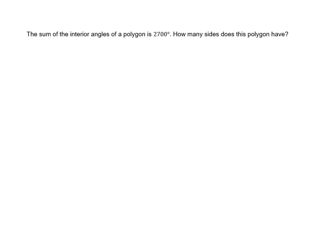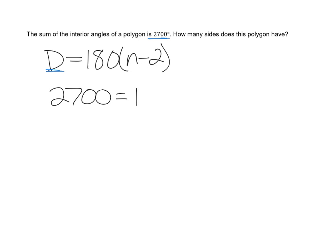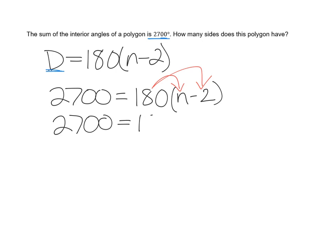The other kind of question you'll get: the sum of the interior angles of a polygon is 2,700 degrees — how many sides does the polygon have? Again, you write out your formula: d equals 180 times (n minus 2). I've been given the degrees, so I write 2,700 equals 180 times (n minus 2). Then to solve this, I'm going to use the distributive property. On my next line, I write 2,700 equals 180n minus 360, because I multiplied 180 times negative 2.